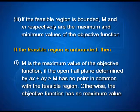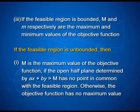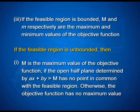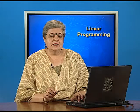If capital M and small m respectively are the largest and smallest values at these corner points, then if the feasible region is bounded, capital M and small m are respectively the maximum and minimum values of the objective function. If the feasible region is unbounded, then a little more care is needed. Capital M is the maximum value of the objective function if the open half plane determined by the inequality Ax plus By greater than M has no point in common with the feasible region. Otherwise, the objective function has no maximum value.